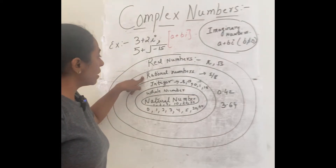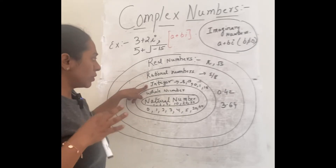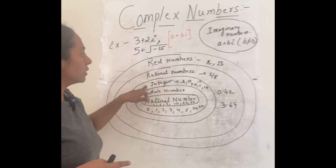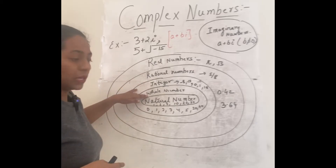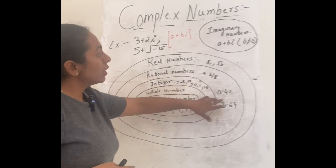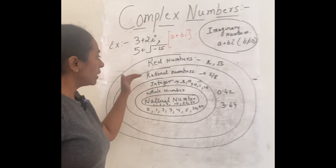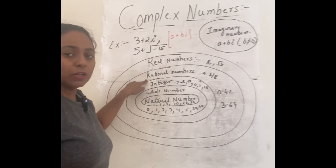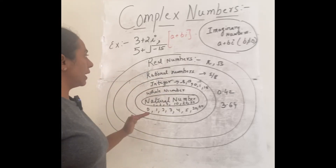Then what is a rational number? Rational numbers include all the integers — all negative numbers, positive numbers, zero, whole numbers, and natural numbers. So rational numbers include negative numbers, positive numbers, fractions, and decimals. Integers, whole numbers, and natural numbers are all included in rational numbers.